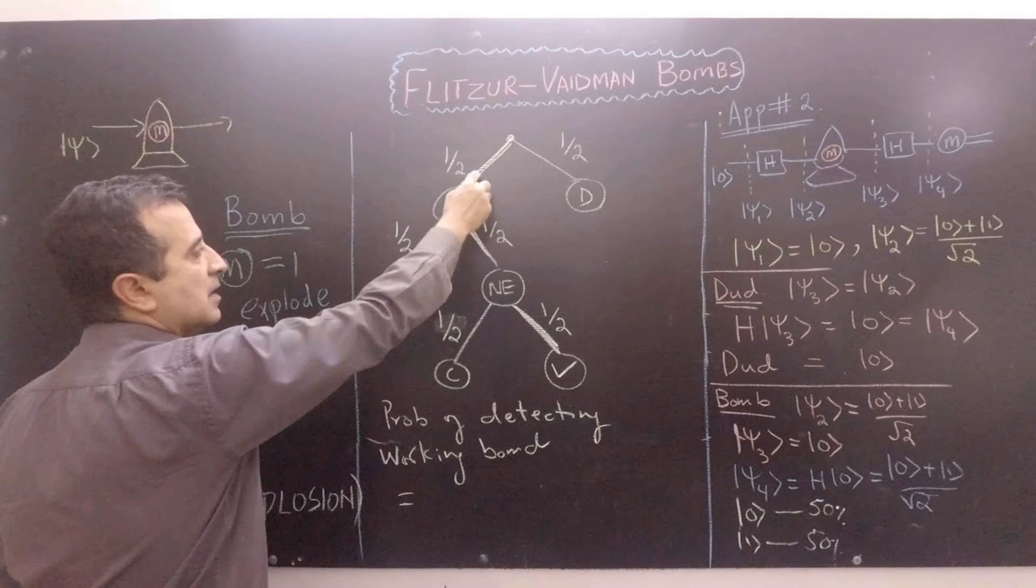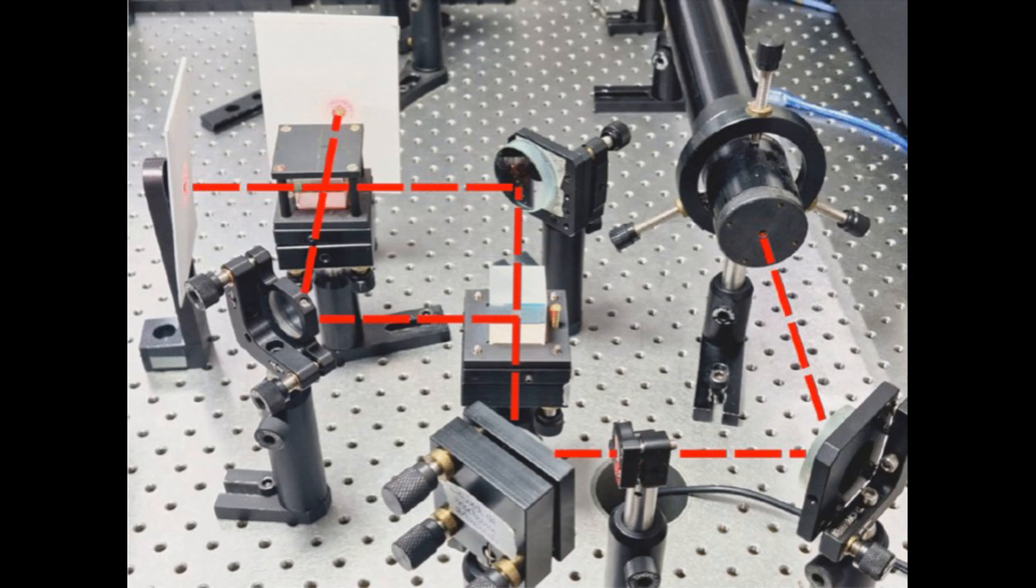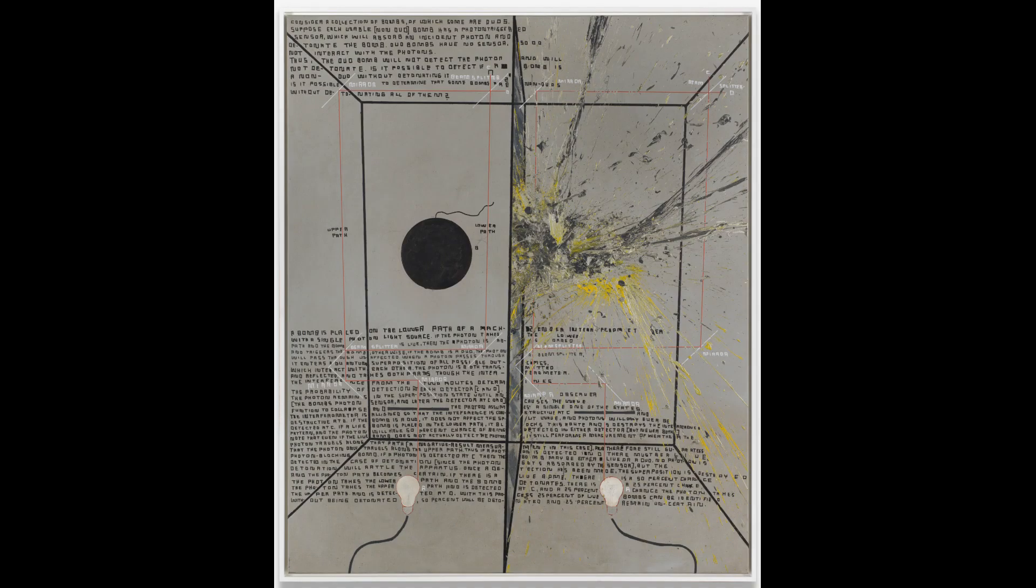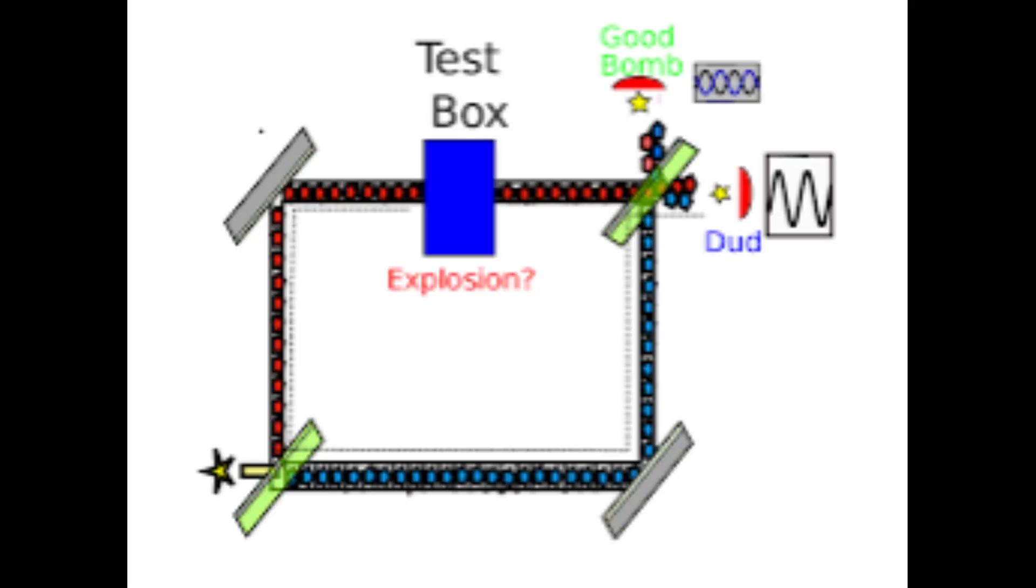By adapting this problem to a less violent scenario involving a firework, we can show how the interaction of a photon with a measuring device, the shaking mirror, can affect the outcome even if the device does not trigger a classical response, the firework exploding. In this adapted scenario, if a live firework is placed behind the shaking mirror, the movement of the mirror, due to the interaction of the photon, produces a measurement.